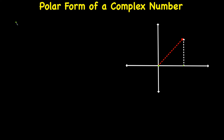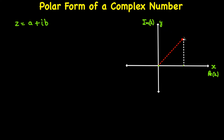Let's start with the basic formula — what the polar form of a complex number looks like. We have a complex number Z equal to a plus iota B, where a is the real part and B is the imaginary part. I'm going to represent this complex number on the Argand diagram, where the X-axis is the real axis and the Y-axis is the imaginary axis. The complex number is represented by point P with coordinates (a, B).